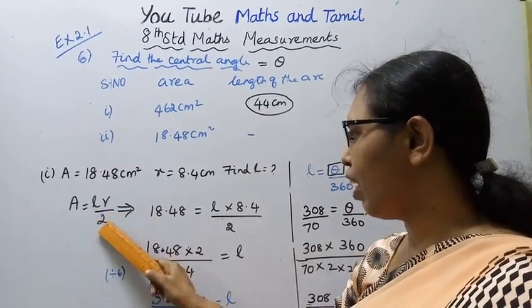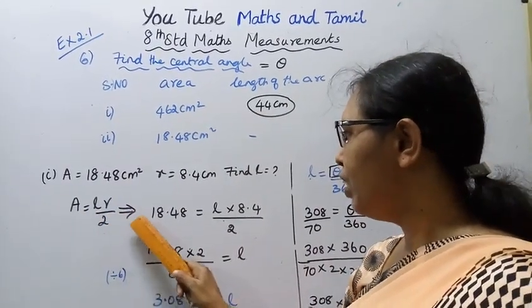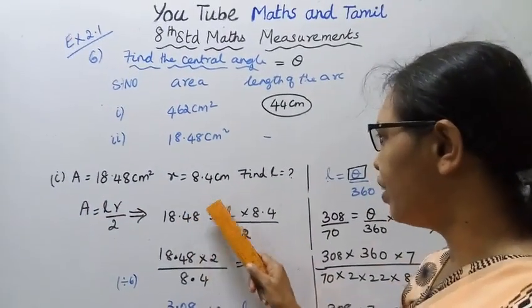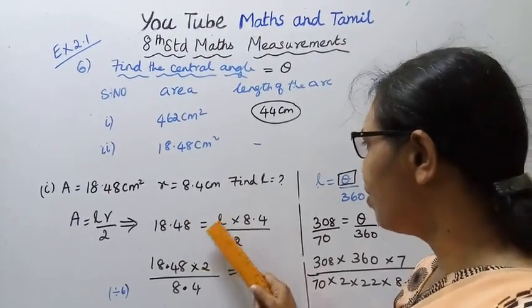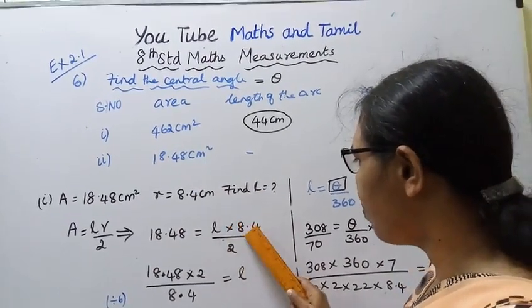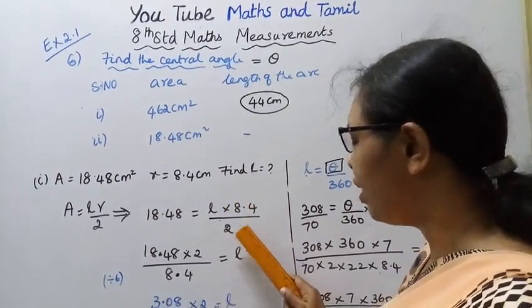Using A equals LR by 2: 18.48 equals L times 8.4 divided by 2.